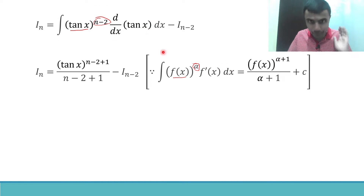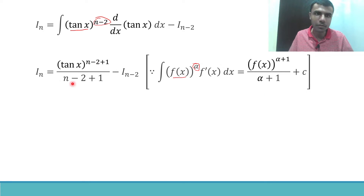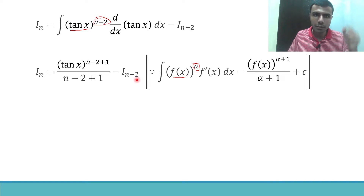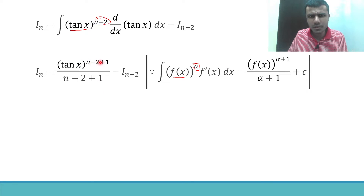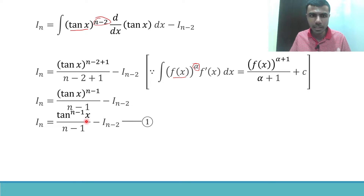So I get the reduction formula: I_n = tan^(n-1) x / (n−1) − I_(n-2). This was actually a shorter derivation compared to the reduction formulas for sin^n x and cos^n x. But to back that up, we have two things to find: the integral of tan^5 x and the integral of tan^6 x.